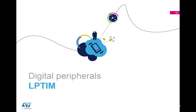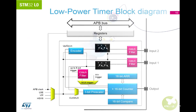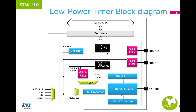Let's now have a look at the low power timer. We have two operation modes: continuous mode, where many counter overruns are possible, or one shot mode, where the counter stops counting when the overrun value is reached. We have up to eight external triggers, all configurable, and up to five clock sources — four internal and one external — to achieve the lowest power consumption. The low power timer can also be used as a pulse counter, and we have up to six interrupt sources available.